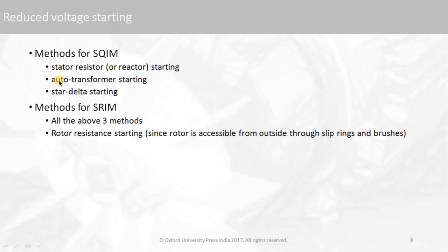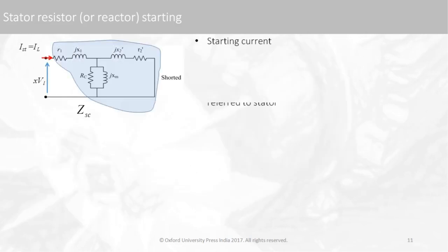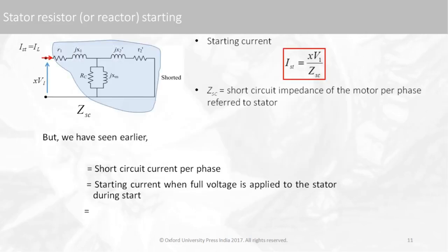There are three methods by which we can implement this for squirrel cage induction motors: stator resistance starting, auto transformer starting, and star-delta starting. Here we will discuss auto transformer starting and star-delta starting.